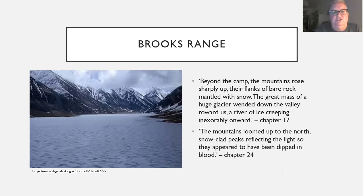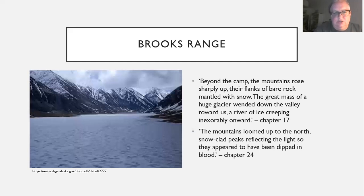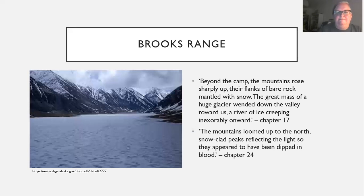From the text: 'Beyond the camp the mountains rose sharply up, their flanks of bare rock mantled with snow. The great mass of a huge glacier wended down the valley towards us, a river of ice, creeping inexorably onward.' And: 'The mountains loomed up to the north, snow-clad peaks reflecting the light so they appeared to have been dipped in blood.' Glaciers are agents of erosion — they move like incredibly slow rivers, can be hundreds of metres deep, and grind away the rock beneath them. A glacier-formed valley is U-shaped, while a river valley is V-shaped. Most glaciers are remnants of the ice sheet from the last ice age, which ended about 10,000 years ago.